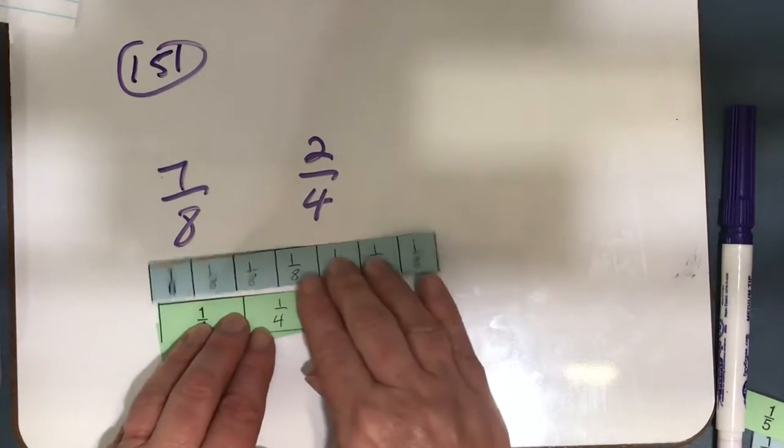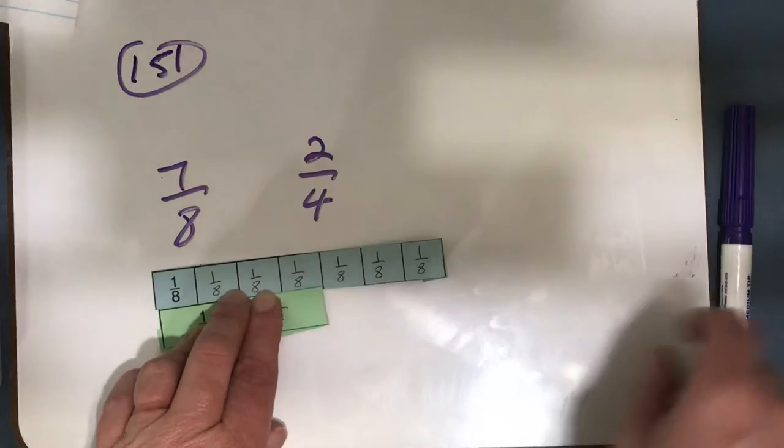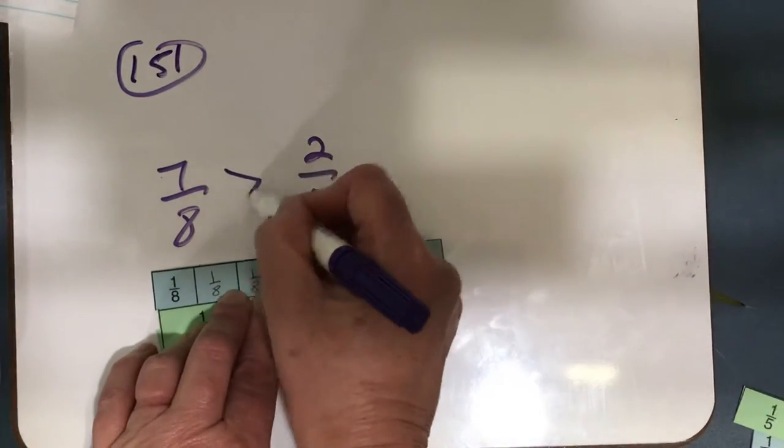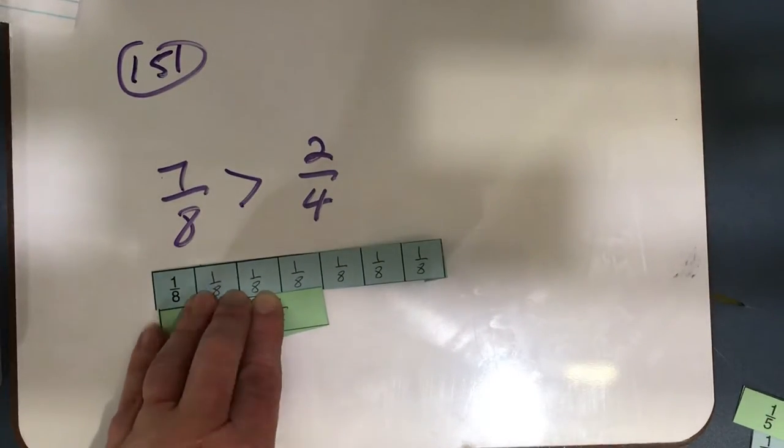I'll just fold back one of the eighths, that's 7 eighths compared to 2 fourths, and I can easily see that 7 eighths is greater than 2 fourths. So 7 eighths is greater than 2 fourths.